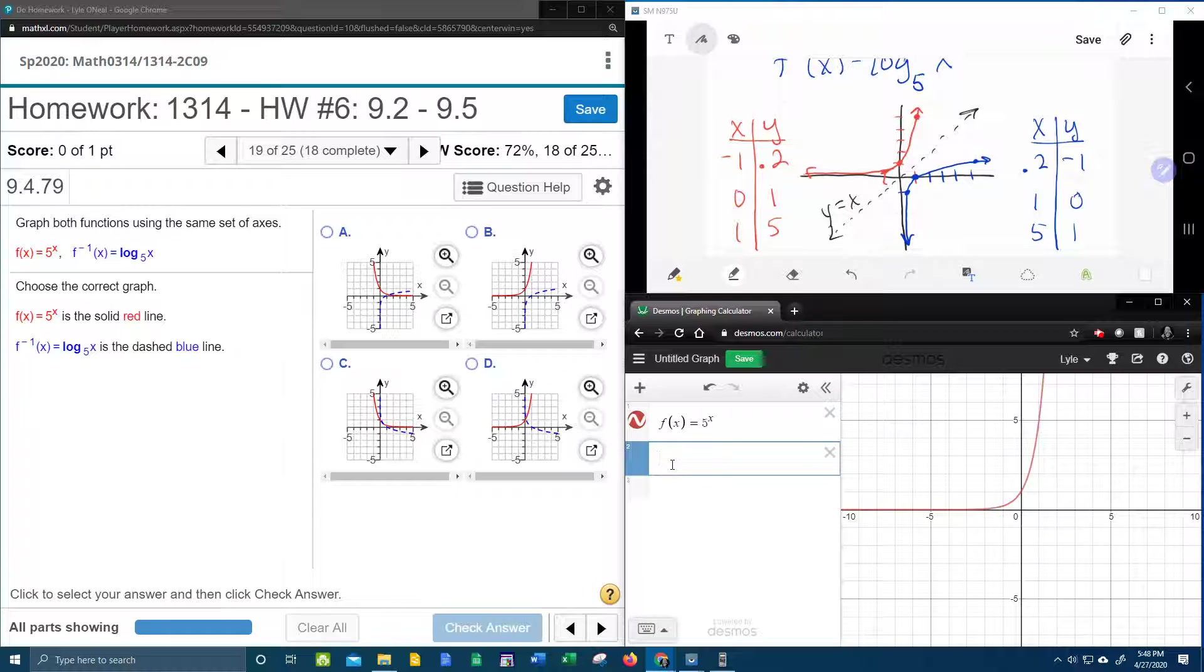And f inverse, which I'm going to call it g of x. For some reason, Desmos doesn't like the inverse notation. So we're going to say g of x equals. Now this function is log base 5 of x.